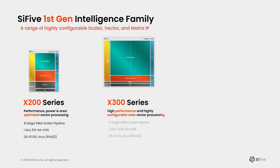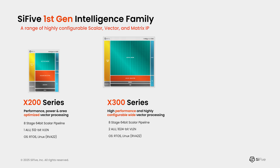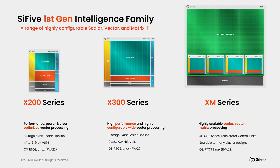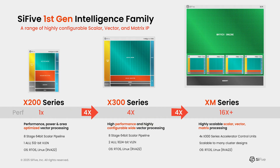Subsequently, we introduced the enhanced performance X390 in the X300 series, which is a wider vector unit with more vector compute. More recently, we introduced the XM series, which combines four of the X390 cores together with a large matrix engine to provide very high-performance acceleration for key AI kernels. Looking across the family, there's roughly a 4X improvement in performance as we go from the smaller to the larger members of the family.